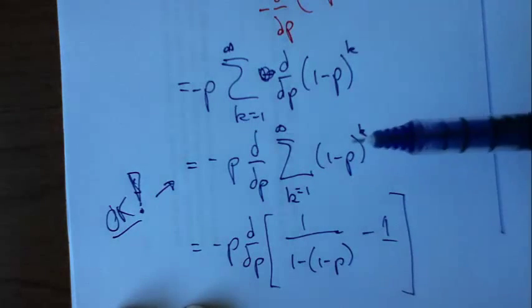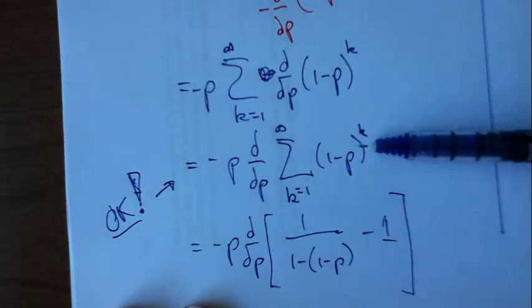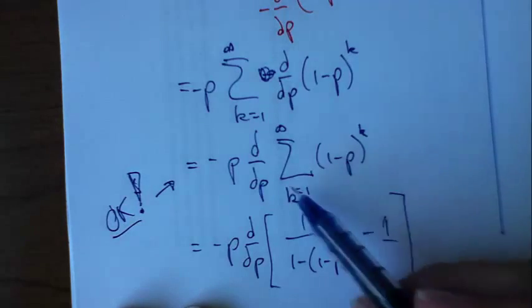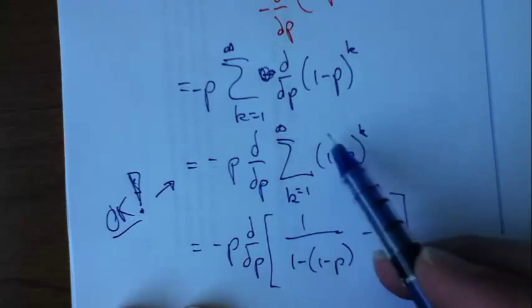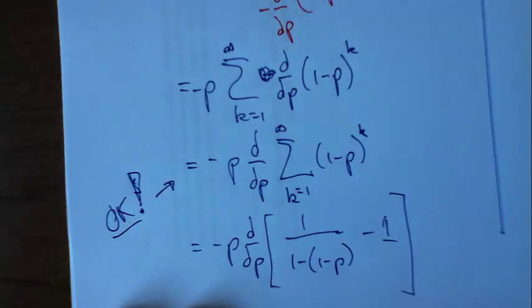Make sure you can go from this step to this step. Make sure you understand what we've done there. If it doesn't make sense to you, just note that this is almost the same as the sum from 0 to infinity of all that stuff. That's what that is.